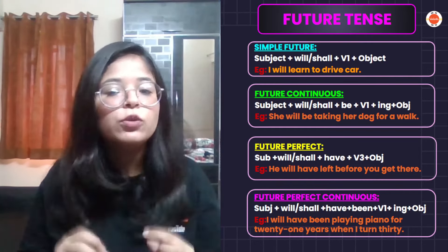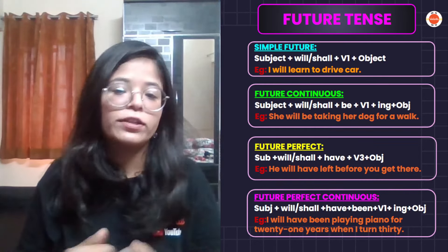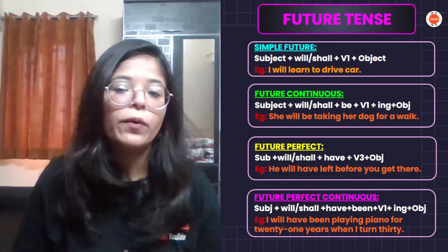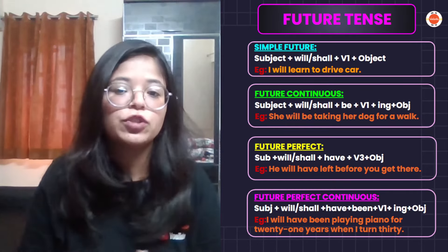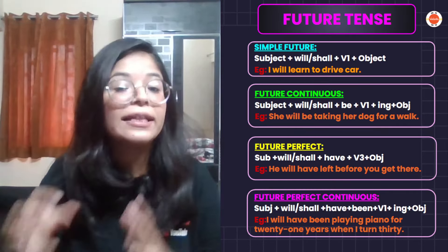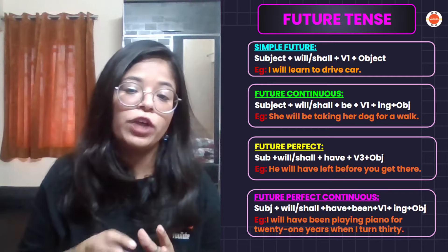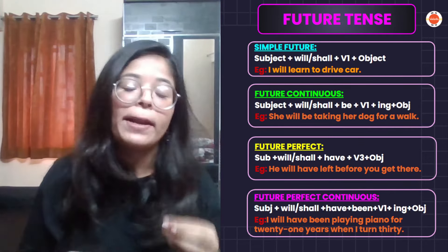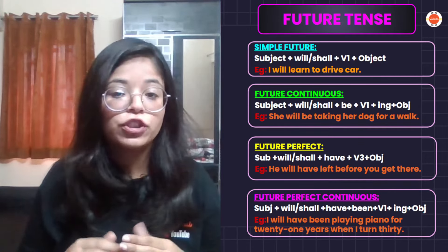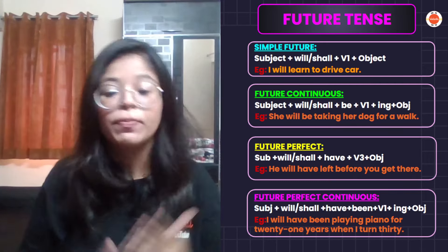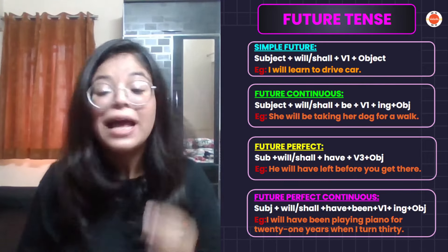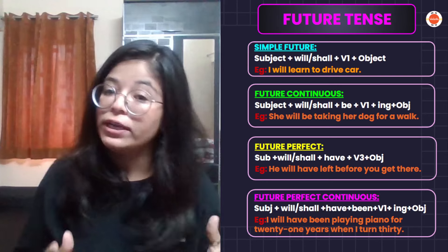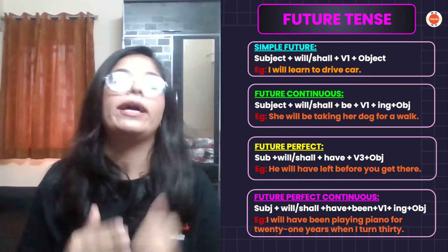If we talk about future perfect continuous tense, then when do you use this? When you say that one action will be ongoing in the future when another action occurs. For example, I will have been playing piano for 21 years when I turn 30.